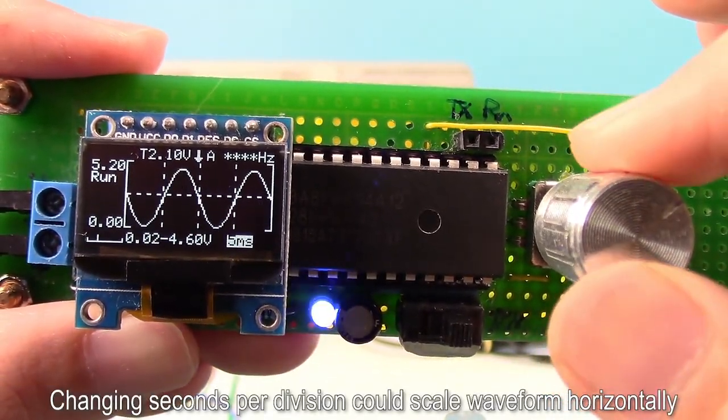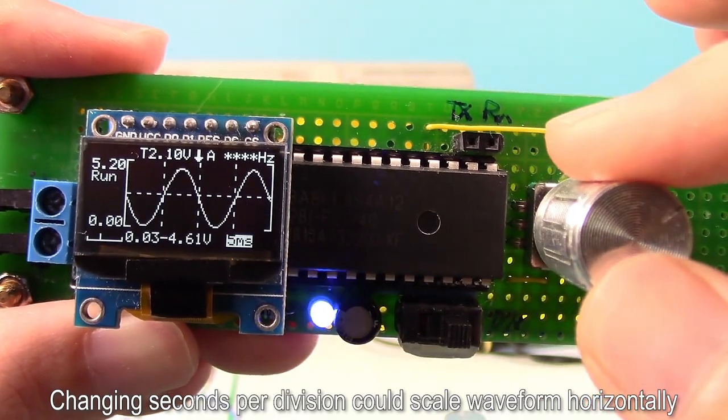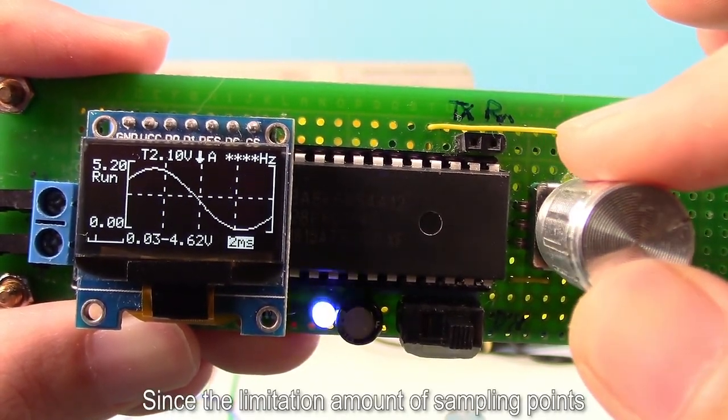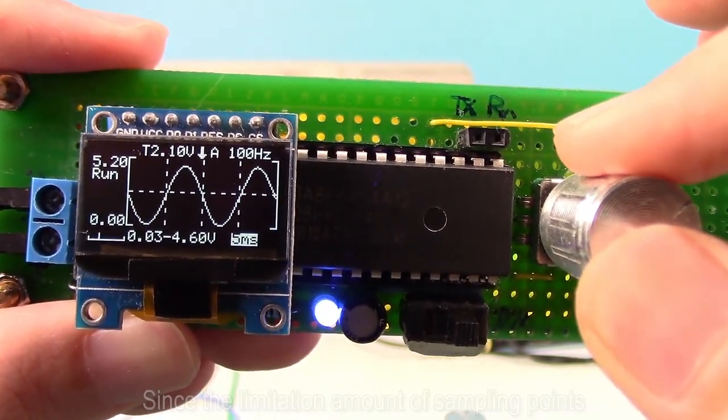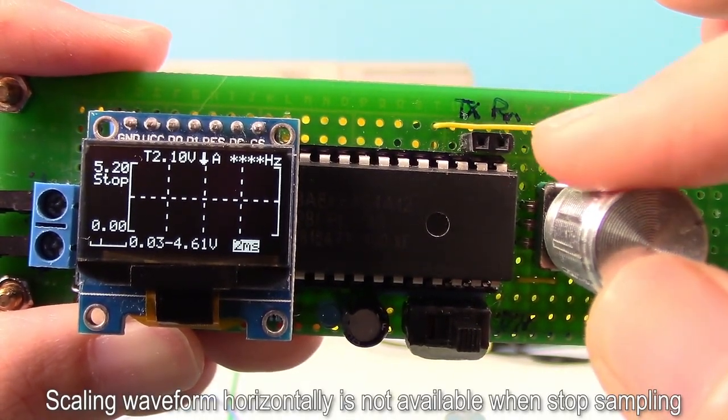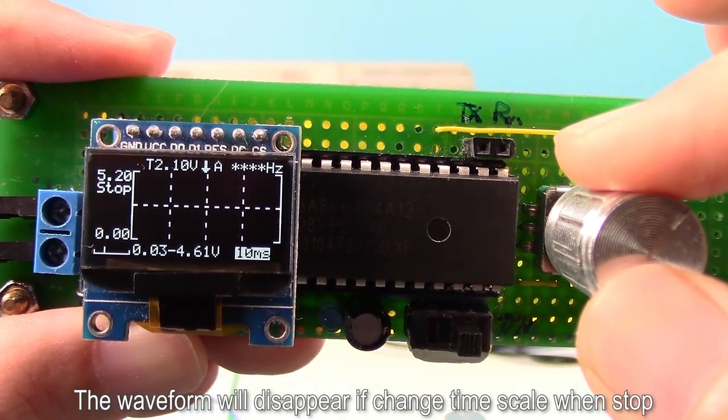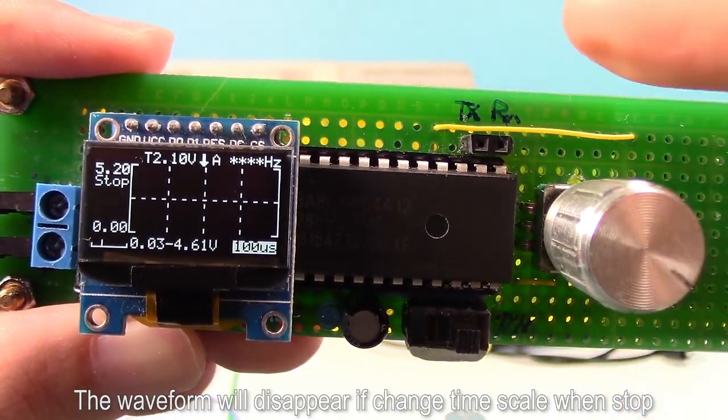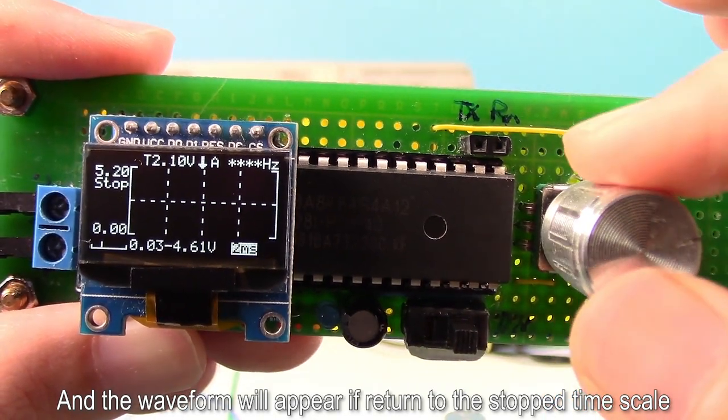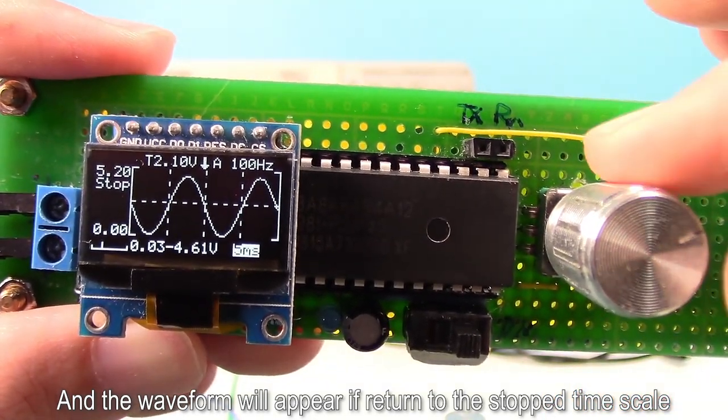Changing seconds per division could scale waveform horizontally. Since the limitation amount of sampling points, scaling waveform horizontally is not available when stop sampling. The waveform will disappear if change timescale when stop, and waveform will appear if return to the stop timescale.